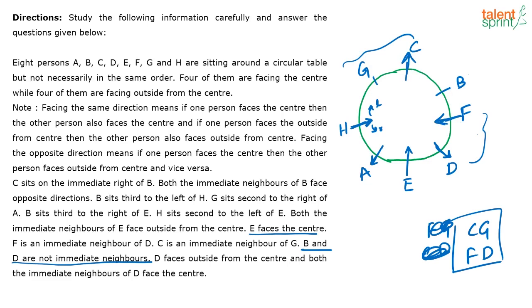Now I need to find the direction of G and B. C sits on the immediate right of B — so which direction should B face? B should face inside, because only then will this be his right and this will be his left. So B faces inside. Now since four people face the center and four face outside, G should face outside.